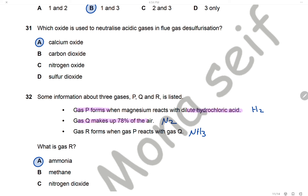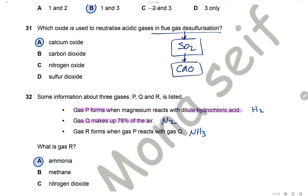Question 31: Which oxide is used to neutralize acid gas in flue gas desulfurization? The flue gas contains sulfur dioxide, which is an acidic oxide. It can be neutralized by a basic oxide. We add calcium oxide because it is a basic oxide that can neutralize sulfur dioxide. The answer is A.